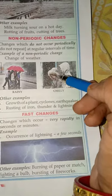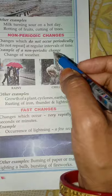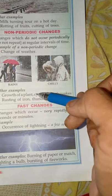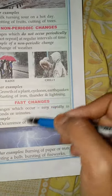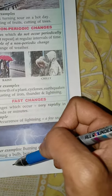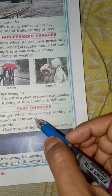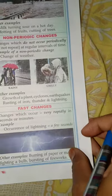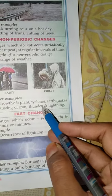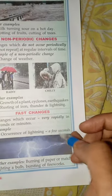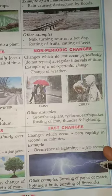Whereas those changes which do not occur periodically and occur at irregular intervals are known as non-periodic changes. For example, changing of weather — sometimes it's sunny, sometimes it's raining. The growth of a plant, you cannot predict whether a particular seedling growing into a plant will take a fixed time interval. Occurrence of cyclones, earthquakes, rusting of iron, occurrence of thunder and lightning — these all are non-periodic changes.